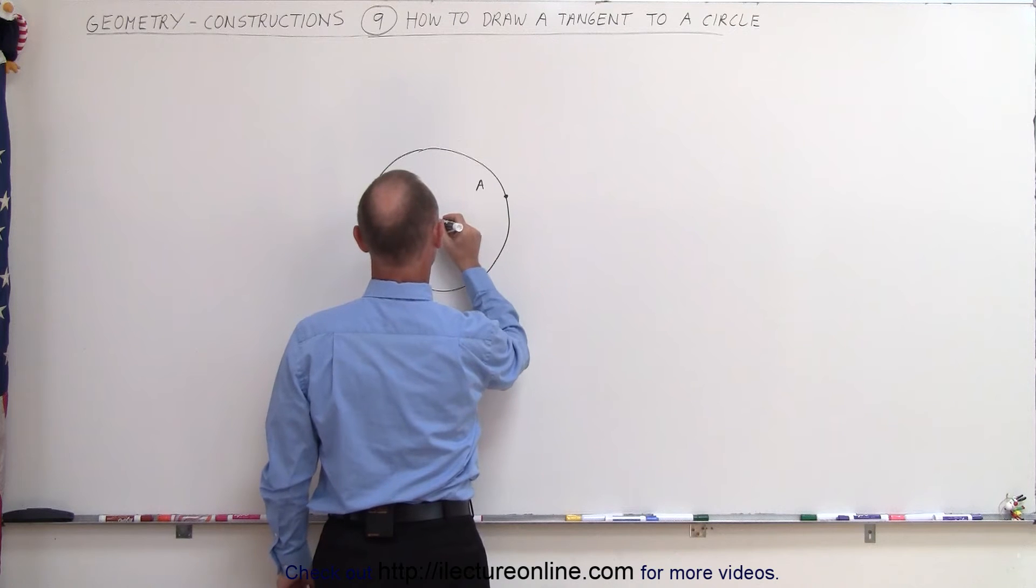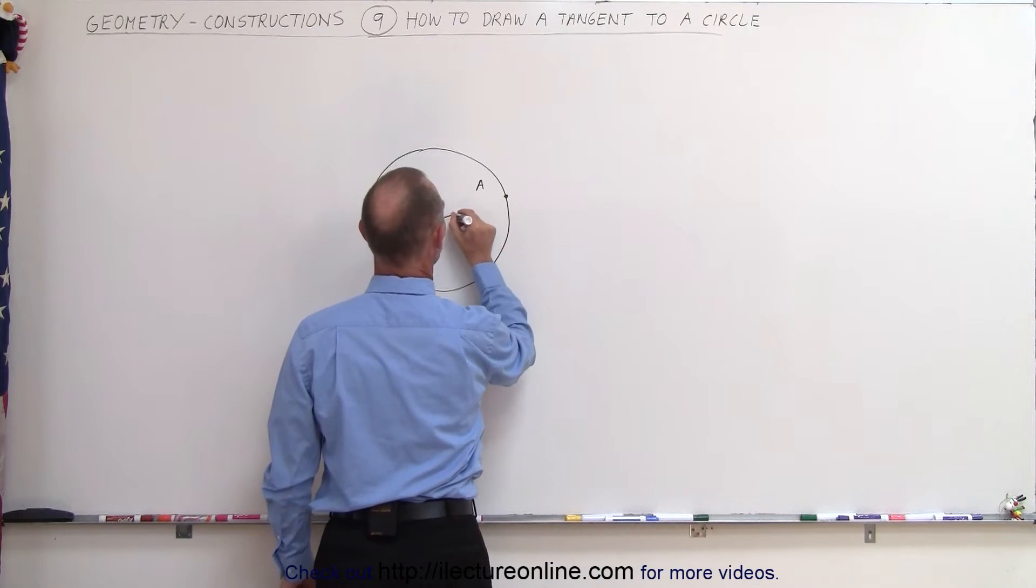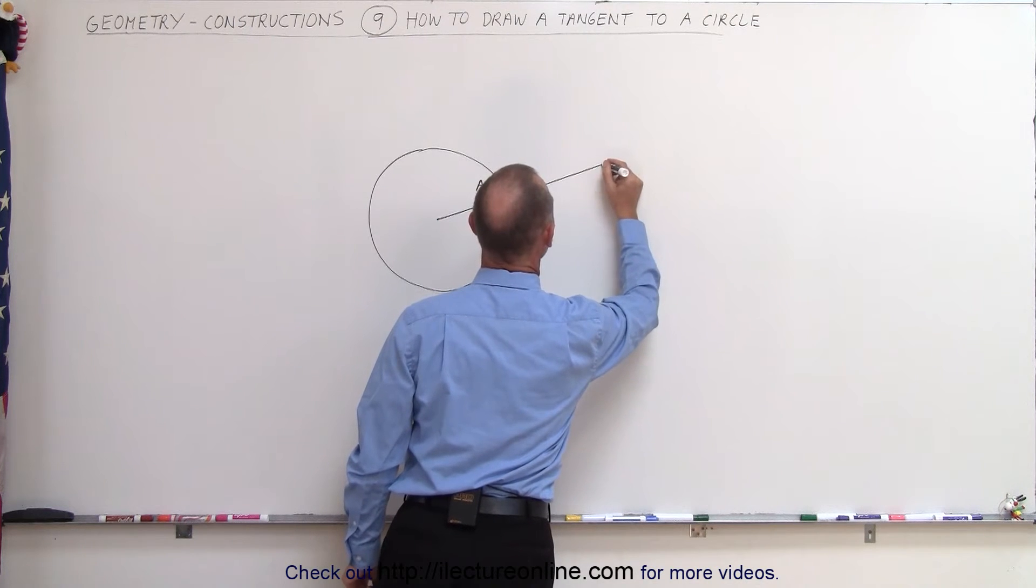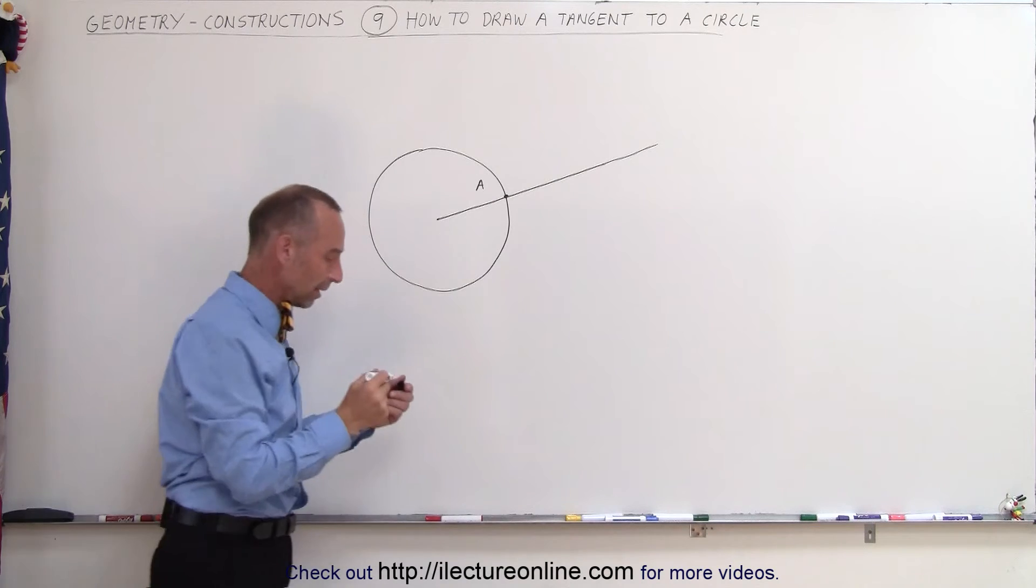And let me go back. The center is probably more like that. Okay, so we draw the line like this. And we want to try to make it as straight as possible. There we go. There's my line.